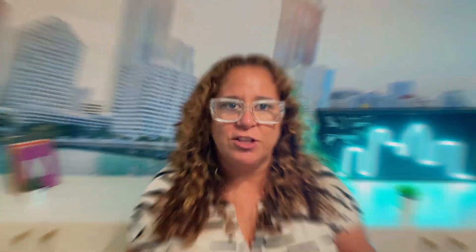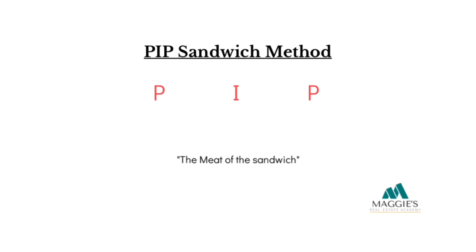Let's tackle those tricky amortization problems you might encounter on your state exam. In these problems, we'll be using what is called the PIP sandwich, where the PIP part of the sandwich is what we will call the meat. The first piece stands for payment, the I is for interest, and the last piece stands for principal.